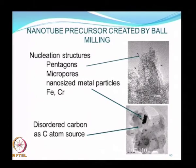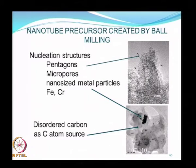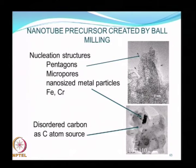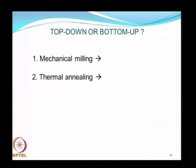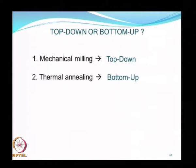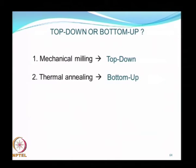Ball milling has been able to produce the precursors for nanotubes — the nucleation structures including pentagons, micropores, nano-sized metal particles, and carbon atoms are produced by this method. This combined process of mechanical milling and thermal annealing is actually difficult to classify as purely top-down or bottom-up — mechanical milling is top-down, but thermal annealing takes loose fragments generated by milling and bonds them together to produce a crystalline structure, making it a combination of both methodologies.